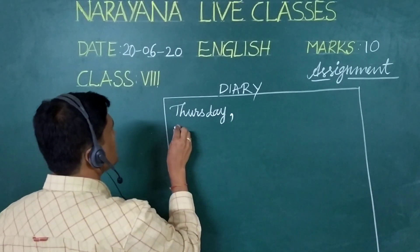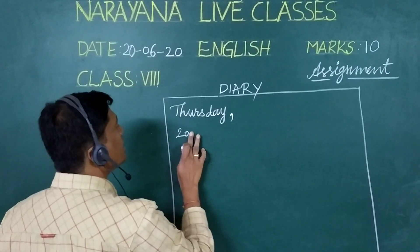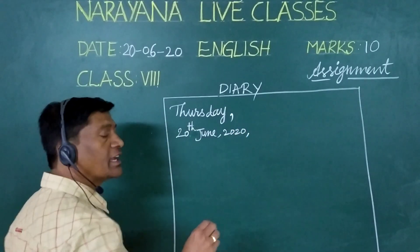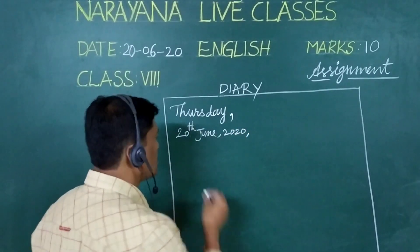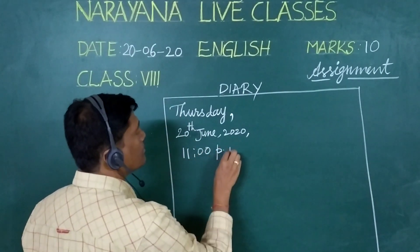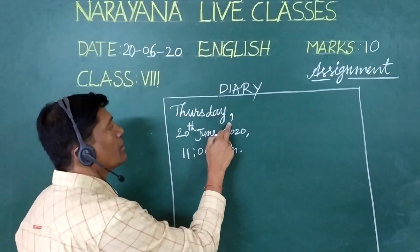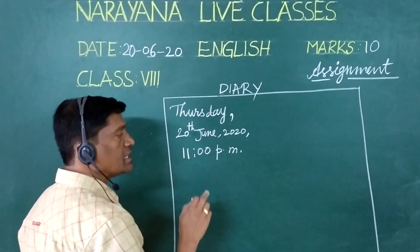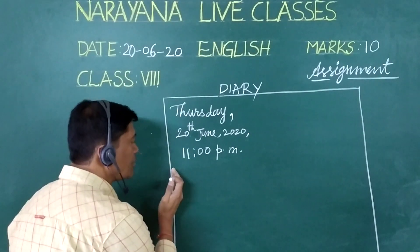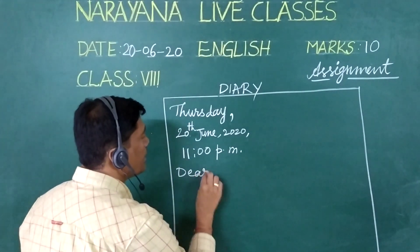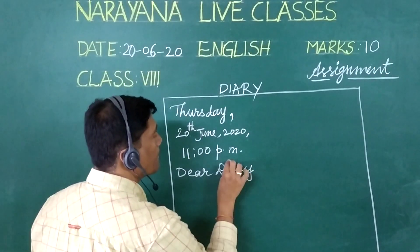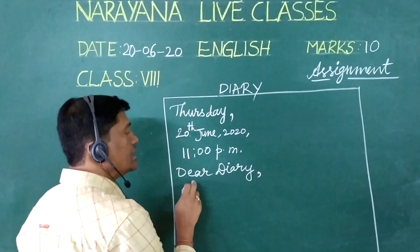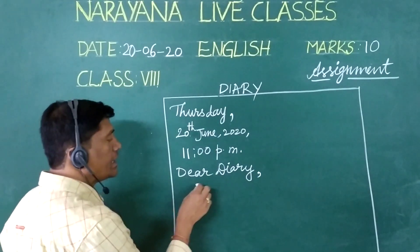Write the date — Thursday, 20th June 2020 — and after June, also write the time: 11 PM. Now here, we should not leave any gap from the borderline to the matter. Write 'Dear Diary' — you are reading the diary as your friend, so dear friend, that means here comma. For letter writing we write similarly — in the same way we write here 'Dear Diary' comma. And here we write the matter.